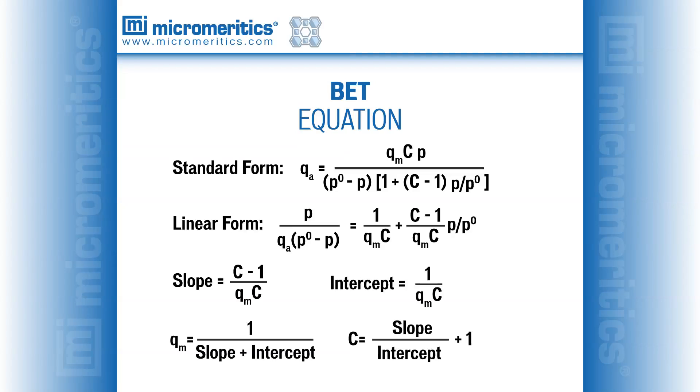If the isotherm data conforms to the BET model, plotting the left side of the linear equation as a function of relative pressure will yield a graph with a linear region. The values of the slope of the linear region and the y-intercept allow the numerical value of the monolayer capacity to be determined as well as the C value.